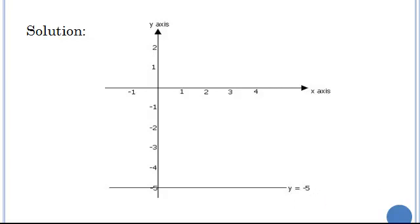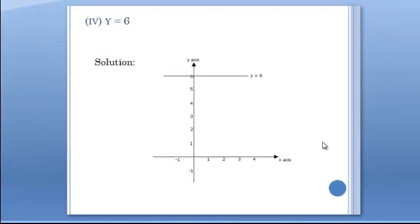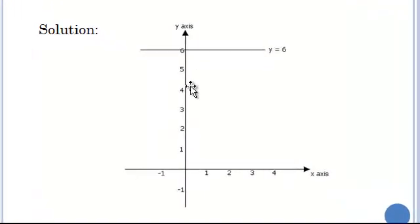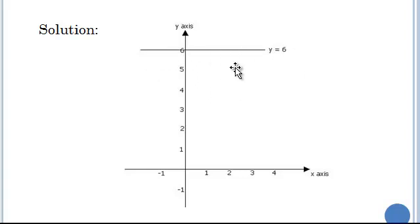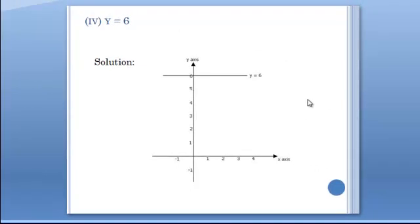Part 4 asks us to draw the graph of the relation y equals 6. Same procedure: we identify the point 6 on the y-axis and draw a line through 6 that is parallel to the x-axis. All along this line, y is equal to 6. When drawing graphs of relations of the form y equals a number, the graph is always parallel to the x-axis.